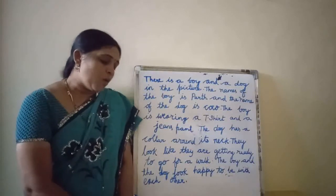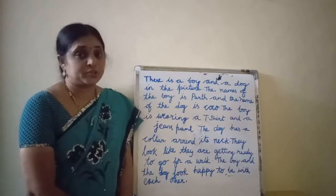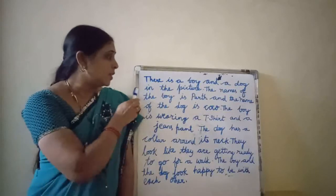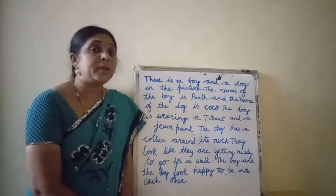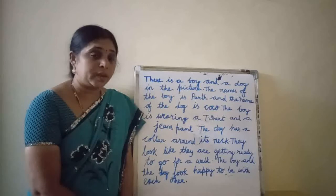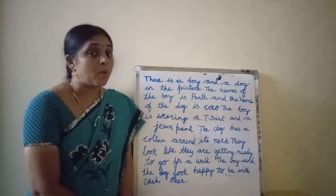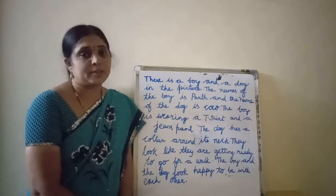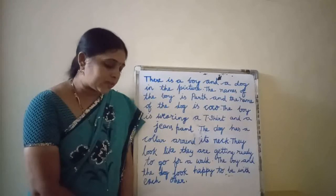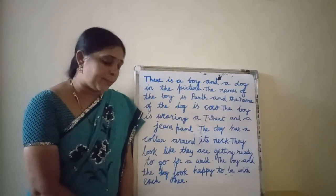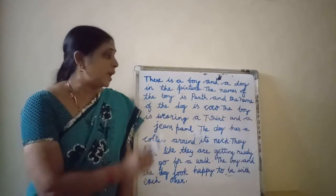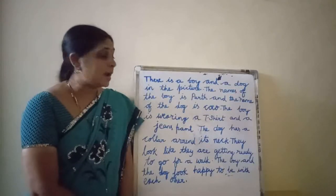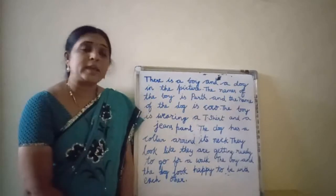First question: What animal do you see in the picture? There is a boy and a dog in the picture. Next: Give names to the person and the animal. The name of the boy is Parth and the name of the dog is Coco.